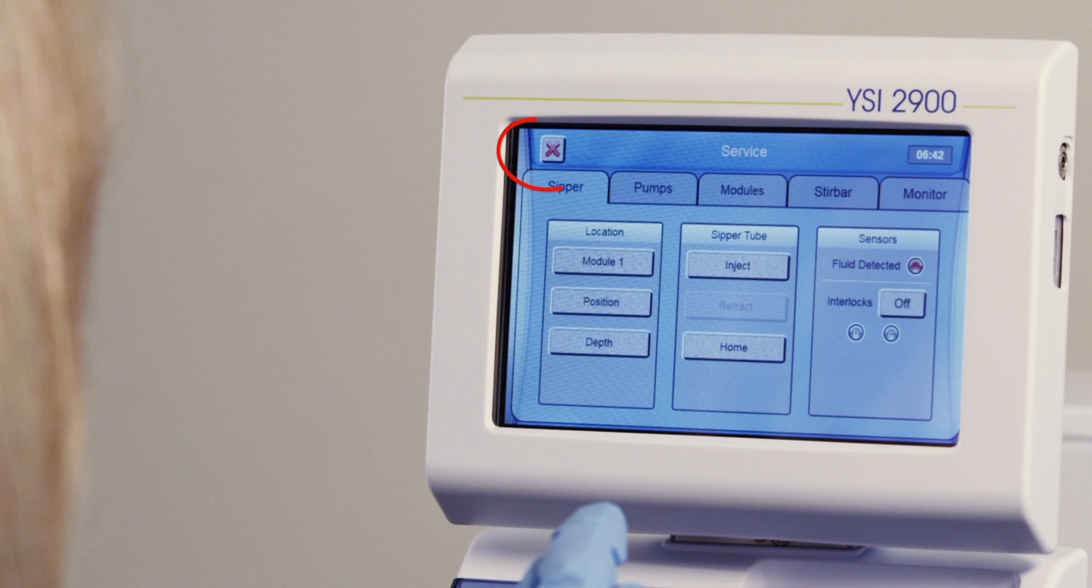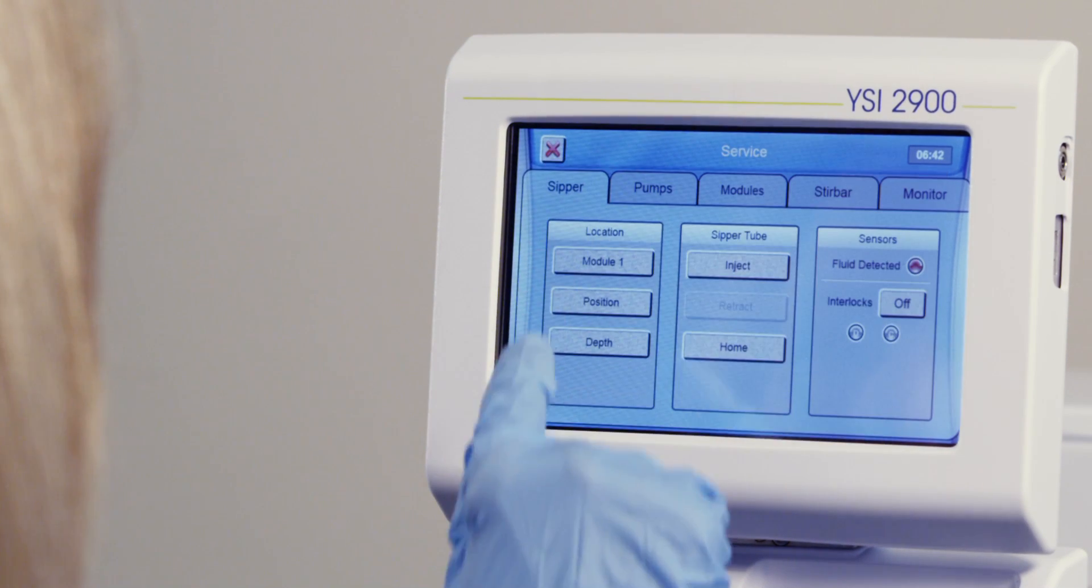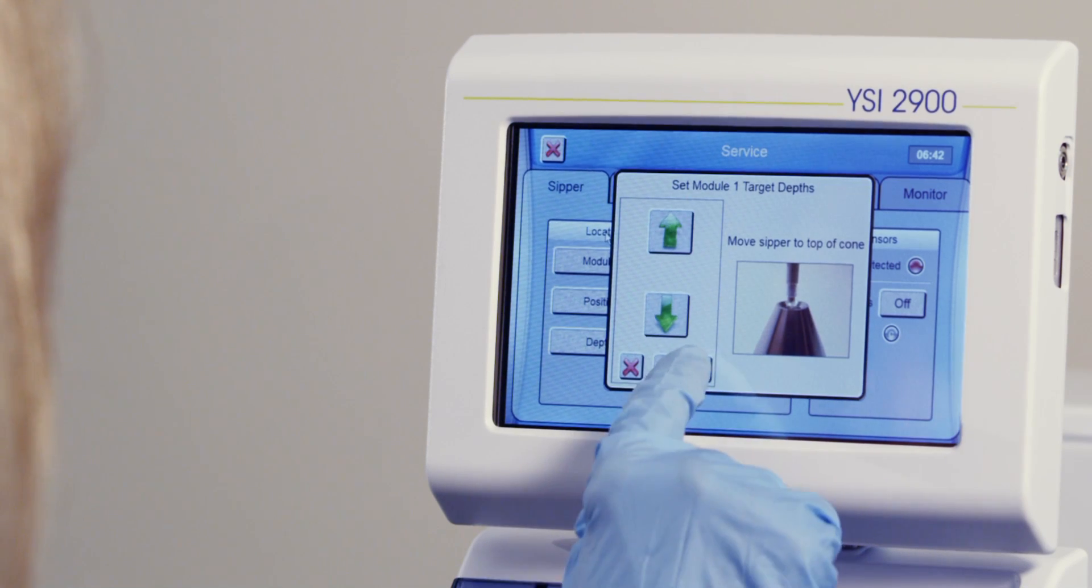To exit without saving, press the red X. To raise and lower the sipper, press the depth button, then press the arrow keys to adjust.